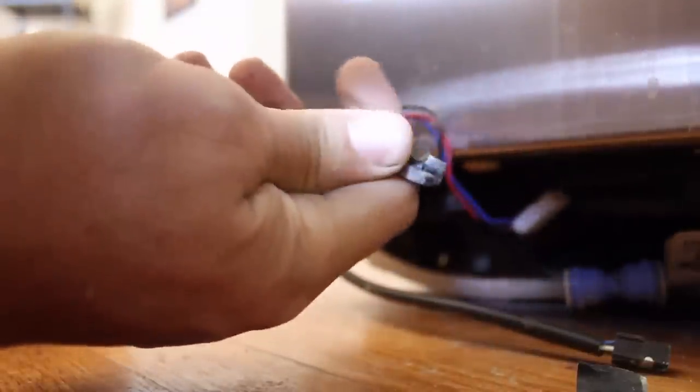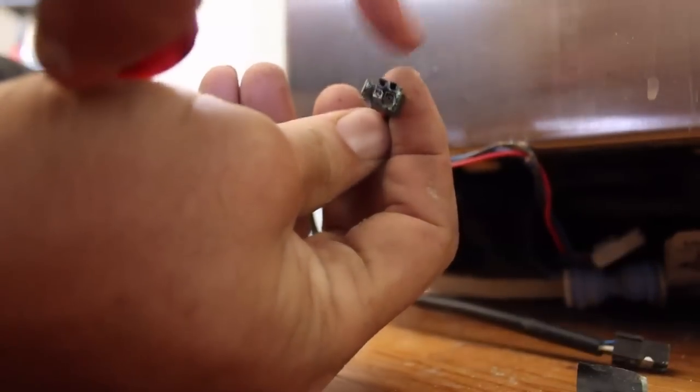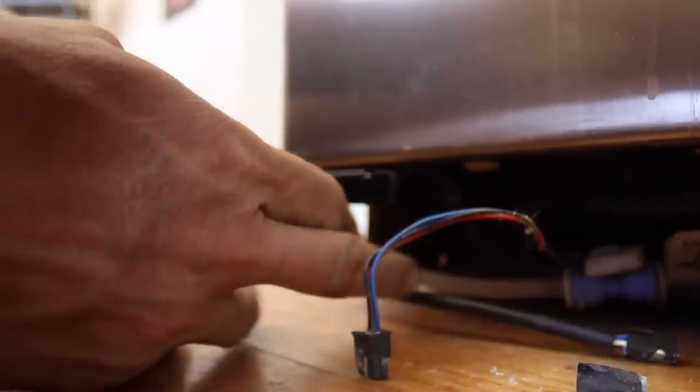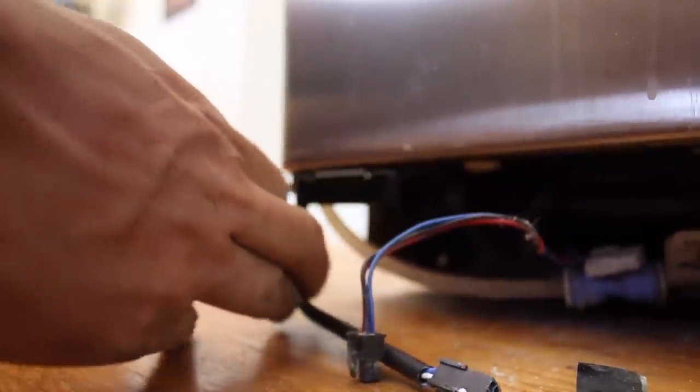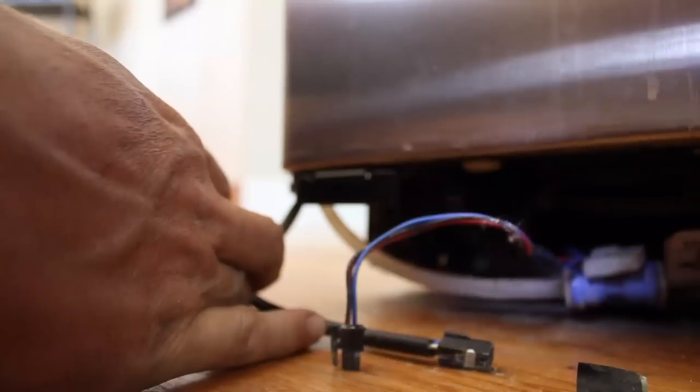So what we're going to do, this provides all the power and the controls and send signals and so forth. So we're going to cut this little connector off, and we're going to cut the connector off on the other side. And we're going to wire these direct to one another, tape them up real good, and that should fix our problem.